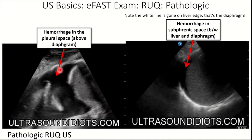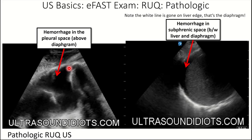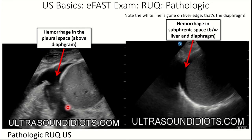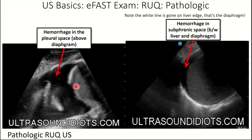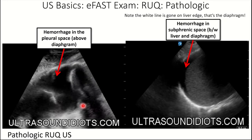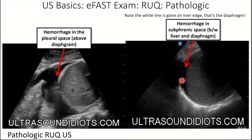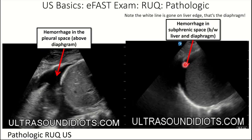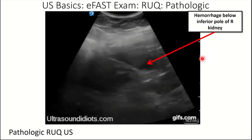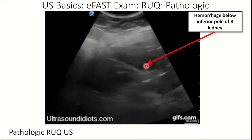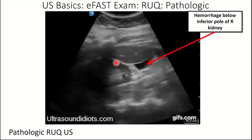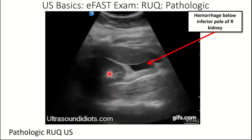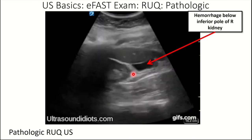Here's hemorrhage in the pleural space — we see black anechoic fluid between the lung and the diaphragmatic stripe, with the lung waving at us. We know it's in the pleural space because the diaphragmatic stripe is tugging tightly against the liver. On the other hand, here is hemorrhage in the subphrenic or subdiaphragmatic space — the diaphragmatic stripe is disconnected from the liver, with black anechoic fluid in between. Here's also hemorrhage at the inferior pole of the kidney — identified by the hypoechoic tissue with brighter white tissue in the middle representing the renal calyces.